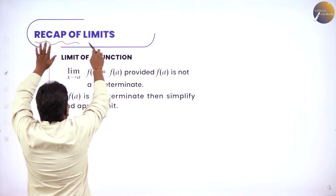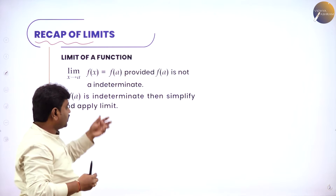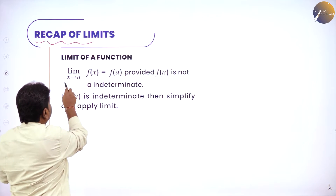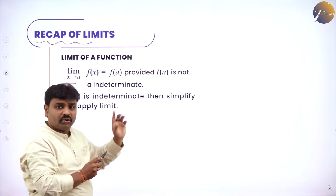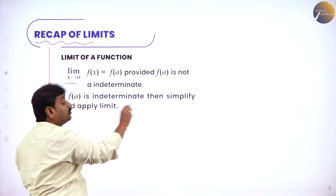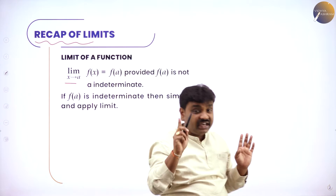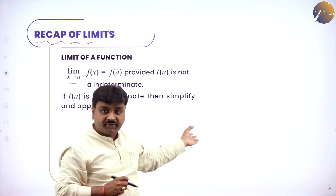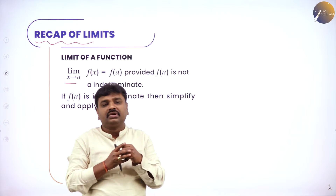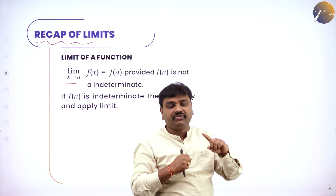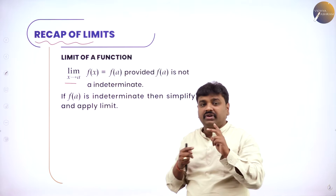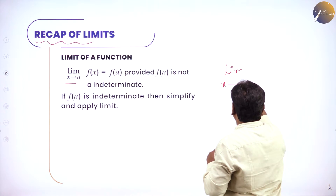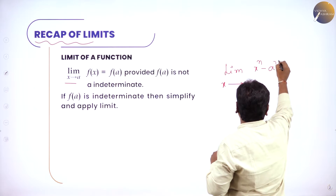In today's class we are doing a recapitulation of limits — recollecting whatever we have already studied. What is limit x tends to a f of x? In the place of x put a, you will get f of a, provided the answer should not be indeterminate. If it is indeterminate, simplify and apply limit. In order to simplify I have done factorization; sometimes we need to use theorems.